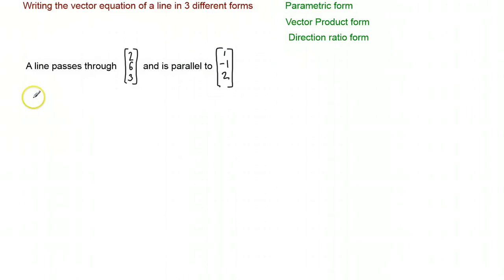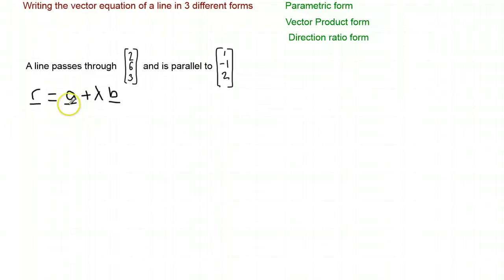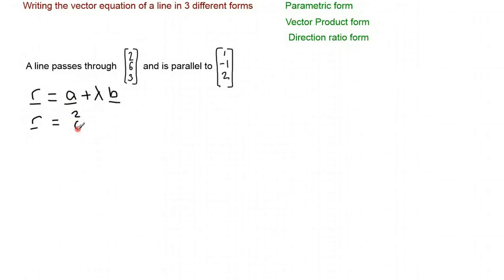So just from Core 4 we know that our general point r is going to be equal to a plus lambda b. Here a is going to be a position vector that our line passes through, and b is going to be a direction vector — that's the direction of our line. So we already have that information given to us, and quite simply we can put those values in: r equals the position vector plus lambda times the direction vector.